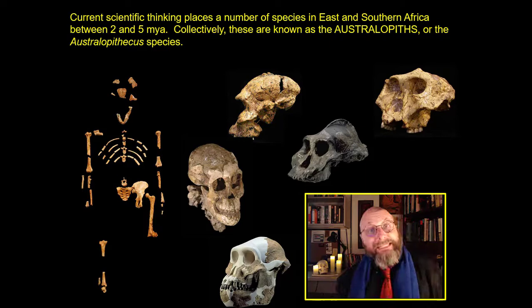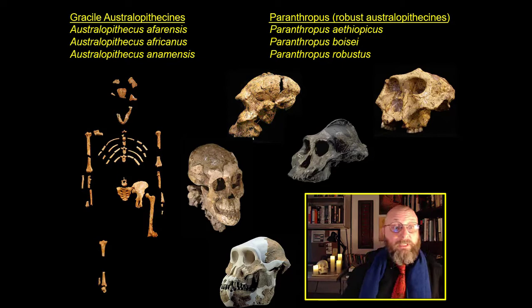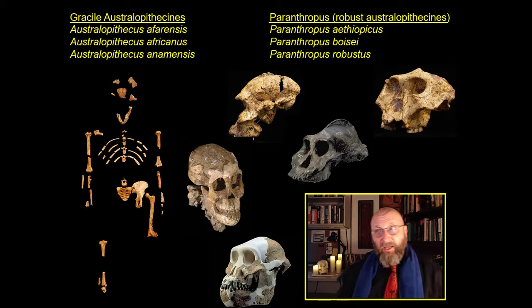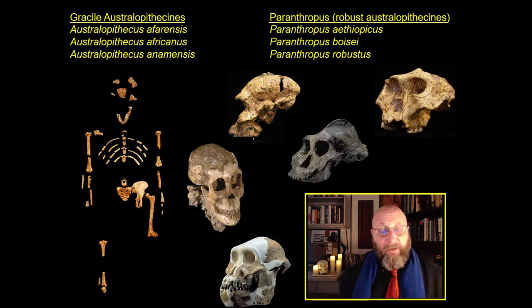Australopiths don't really exist anymore. But in your mind, imagine a chimpanzee — make them slightly taller, give them longer legs and much, much smaller arms, and you've probably got more or less what these australopith species looked like. Current scientific evidence places a number of species in East and Southern Africa between about 2 and 5 million years ago. It's not a single species, but rather a group of species that are kind of loosely defined.